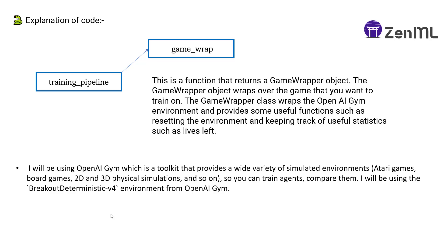Game wrap wraps your game over the particular environment — as we saw in the definition of reinforcement learning, the agent requires an environment to work on. We use OpenAI Gym which provides a wide variety of simulated environments. For detailed step-by-step code understanding of game wrap, you can follow the detailed blog on Medium, which I'll link in the description box below.